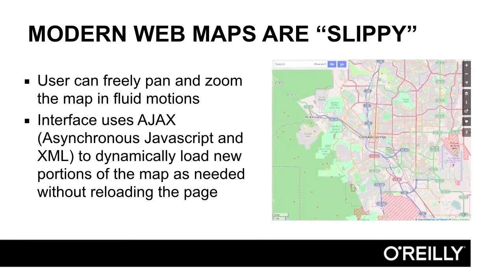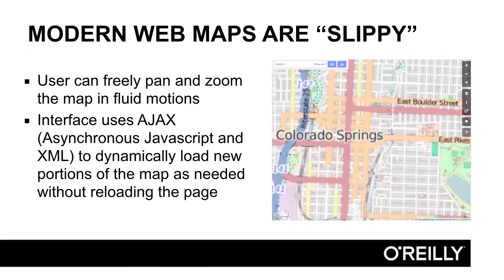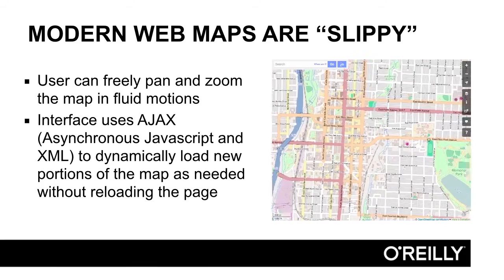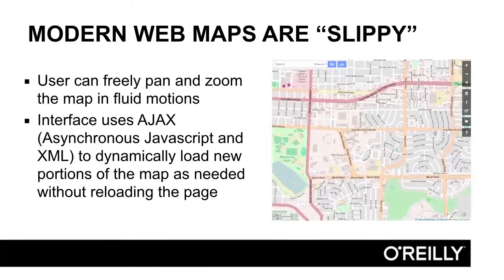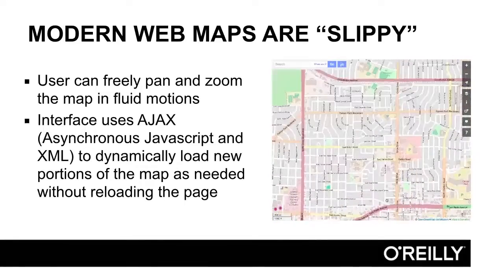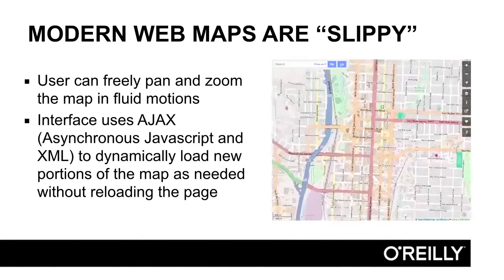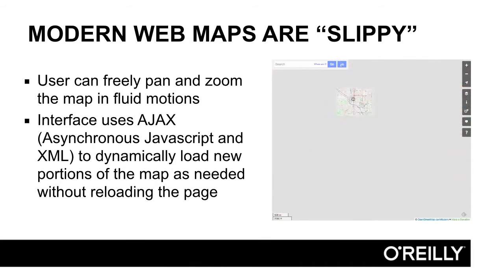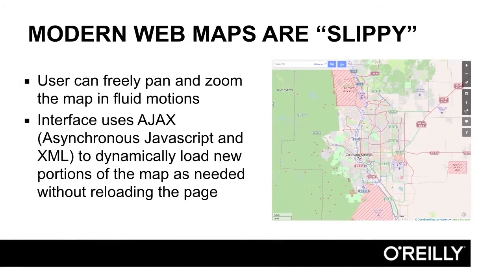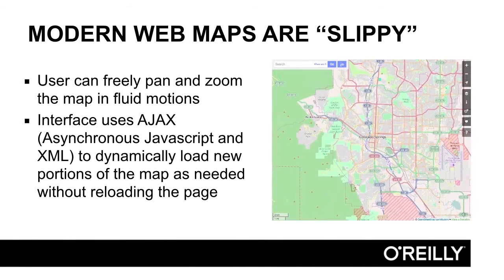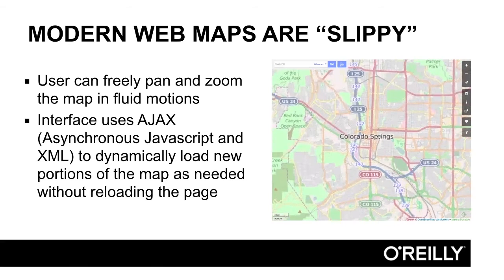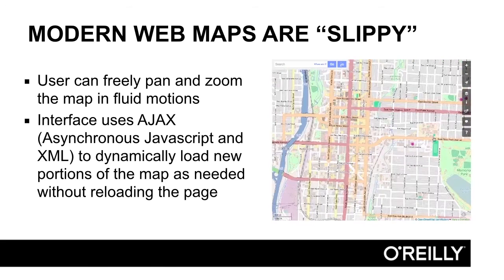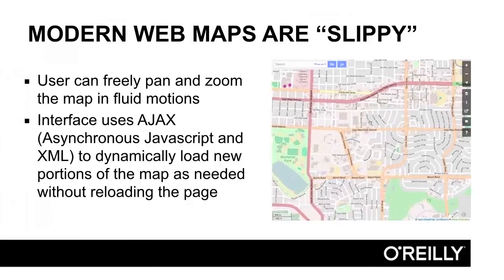Today's webmaps are known as slippy maps. The user can freely pan and zoom in the map with fluid motions. The interface uses Ajax, also known as asynchronous JavaScript and XML, to dynamically load new portions of the map as needed without reloading the whole page.